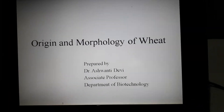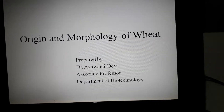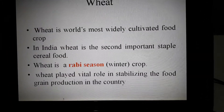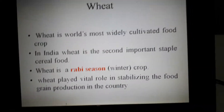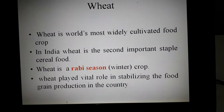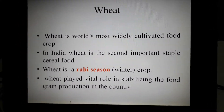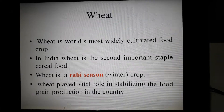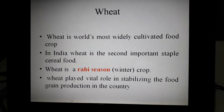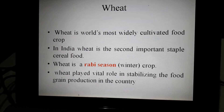Good morning. Today we are dealing with the cereal crop wheat — specifically its origin and morphology. Wheat is a Rabi crop, meaning it is a winter crop. Its sowing time is in winter and it is harvested at the onset of summers. Wheat is the most widely cultivated food crop, and in India it is the second most staple cereal food.